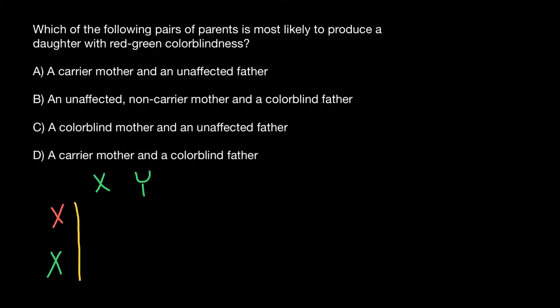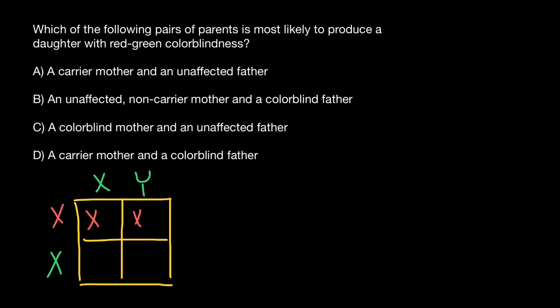When we build a simple Punnett square, we can see what progeny this couple may have. The defective X chromosome inherited from the mother's side appears here and here, giving us two normal X chromosomes and one X and Y combination. None of the daughters are going to be affected — this daughter is going to be a carrier.